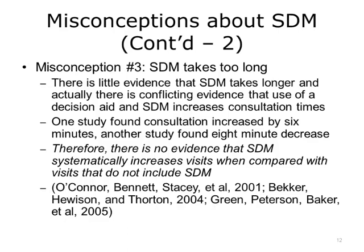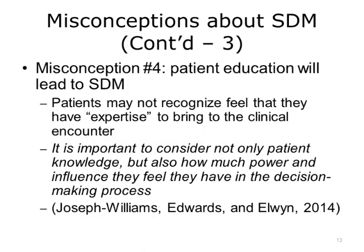A third misconception about shared decision-making is that it just takes much too long. There is little evidence to prove this. Although visit length may vary depending on the context, no one has proven that shared decision-making systematically takes longer than visits that do not include SDM. With respect to the use of patient decision aids to facilitate SDM, trials cited in the Cochrane Database of Systematic Reviews found conflicting evidence that use of a decision aid increases consultation times. One study found consultations increased by six minutes when a decision aid and SDM were used; another found interaction time was eight minutes shorter when similar consultation techniques were used. Therefore, there is no evidence that SDM systematically increases visit times.